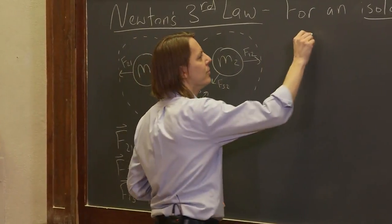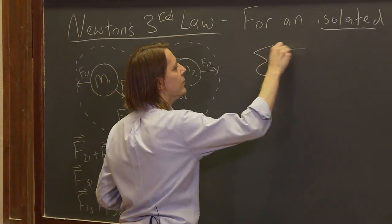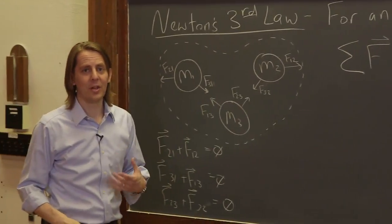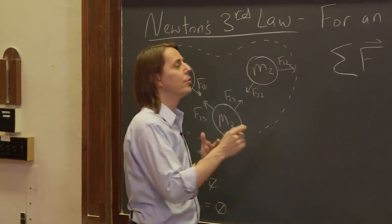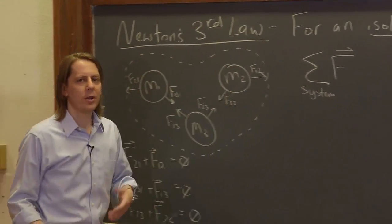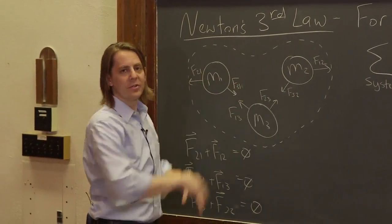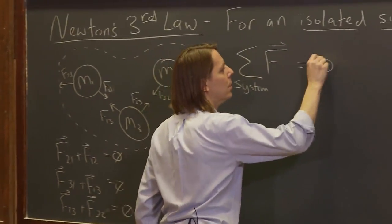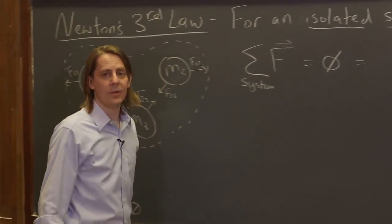So let's write that mathematically. So now, I'm going to sum those forces. The sum of the forces, now you're used to that meaning on a single object. Newton's second law. This is not Newton's second law. This is Newton's third law. So let's say the sum over an entire system. So not really on a single object, but on all the objects in the system. Let's add up all those forces. That would equal 0.